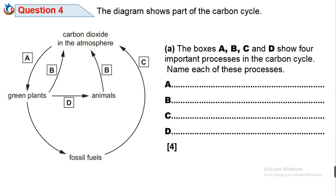A is the process by which green plants make use of carbon dioxide from the atmosphere. This process is called photosynthesis — the process by which green plants make use of carbon dioxide to manufacture their food.